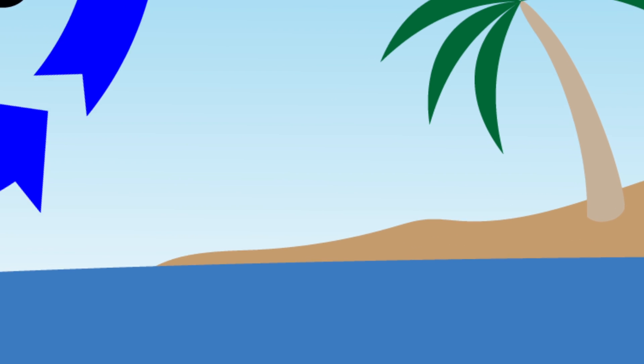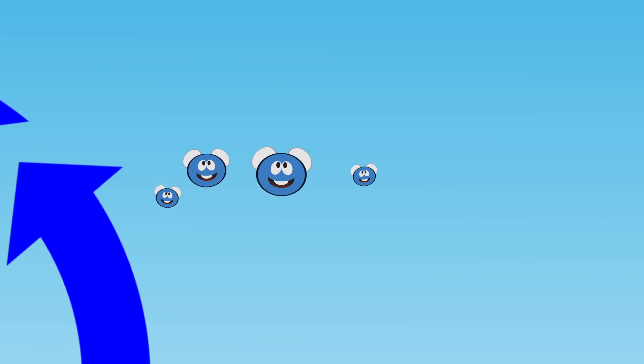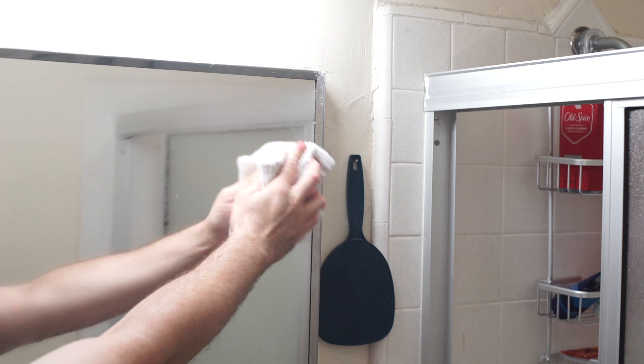The first step in the water cycle is evaporation, when water heats up. It becomes water vapor. This is like the steam you see coming off a hot cup of tea, or when you take a bath, and the mirror becomes foggy. That's because there's water vapor in the air.